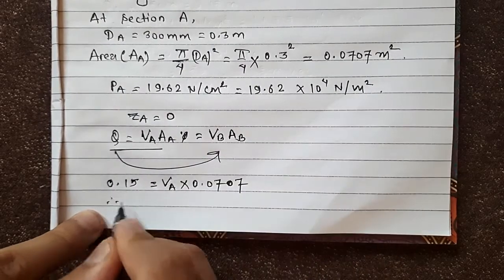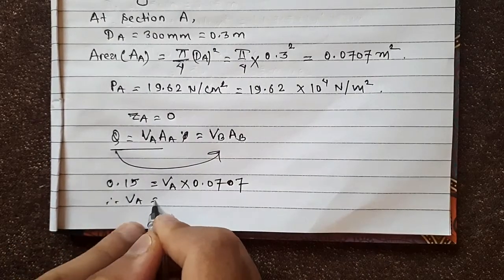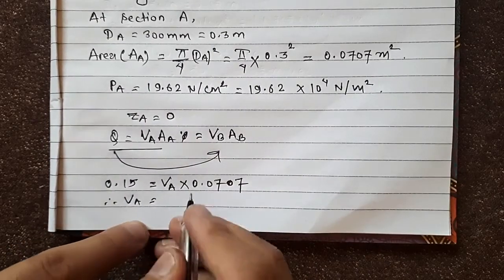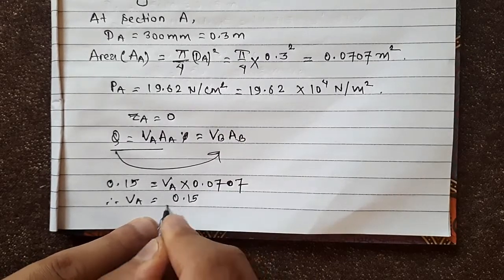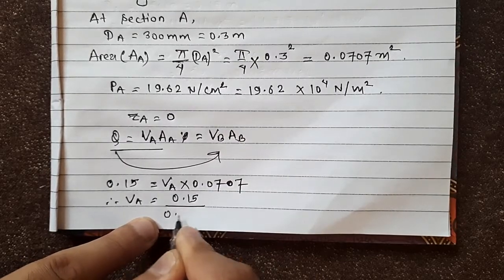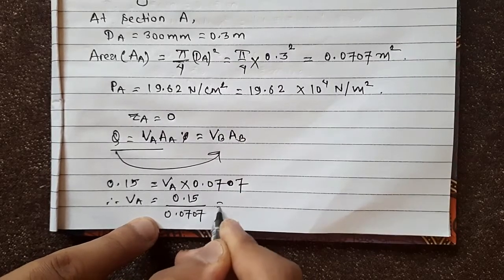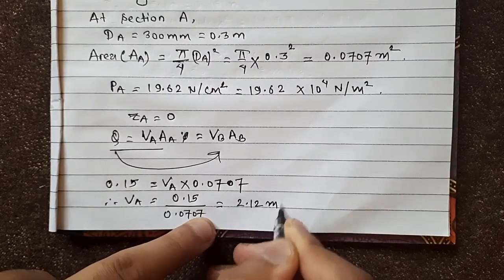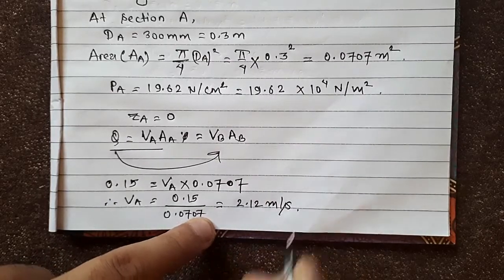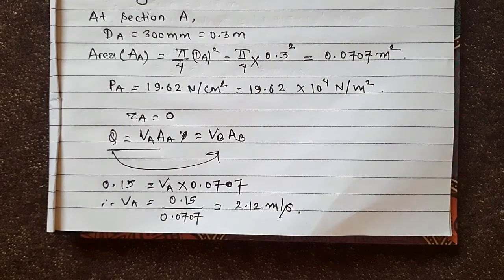Therefore, flow velocity at A = 0.15 divided by 0.0707 = 2.12 meters per second.